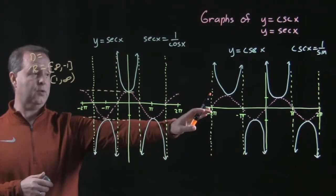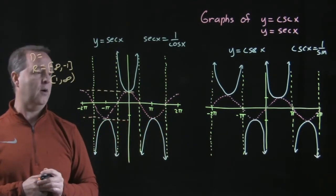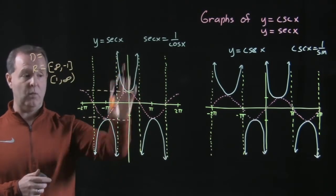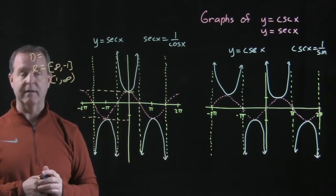My cosecant graph is an odd graph. It's symmetrical about the origin. My secant graph is symmetrical about the y-axis, so it's an even function.